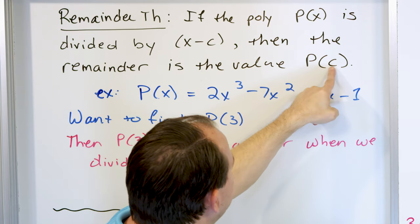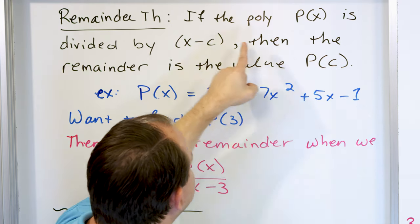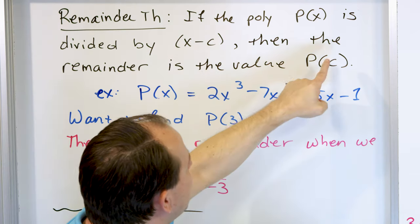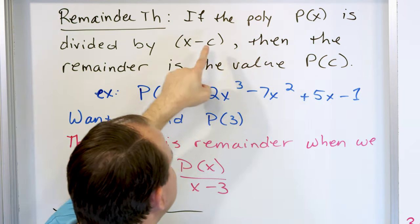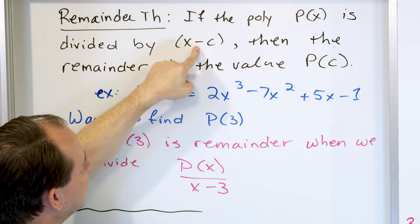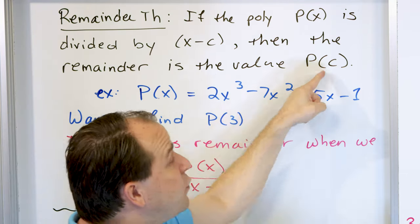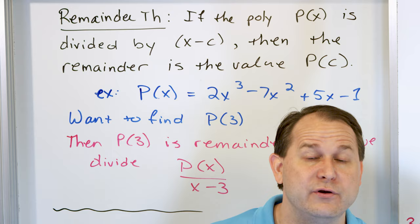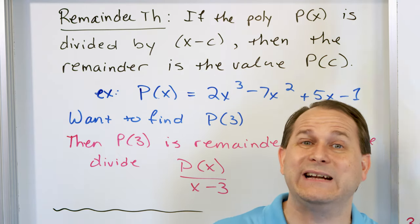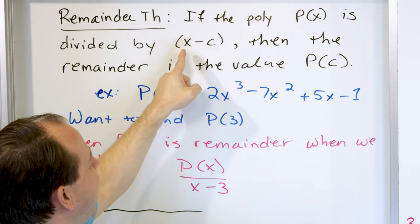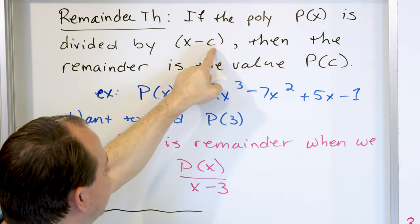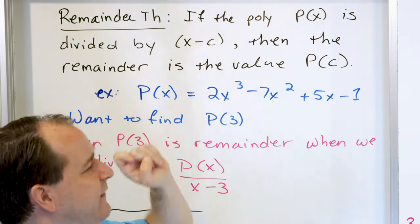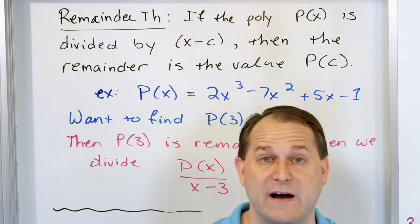If you want p evaluated at 34, divide by x minus 34 and find the remainder. If you want p evaluated at 7, divide by x minus 7 and find the remainder. If you want p at negative 2 — because c can be negative — you divide by x plus 2, since that's x minus negative 2. Divide by x plus 2 and find that remainder.